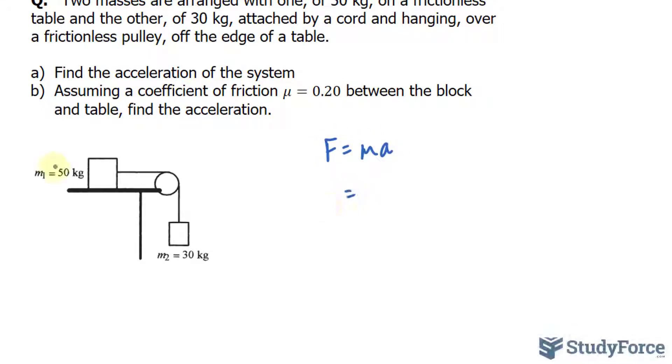The mass is equal to 50 kg, the acceleration of the system is what we're looking for, and the force is the tension that's unknown. In relation to this mass, let's assume that the acceleration is going clockwise, so it's going this way. So in that case, again we'll use F equals mA.